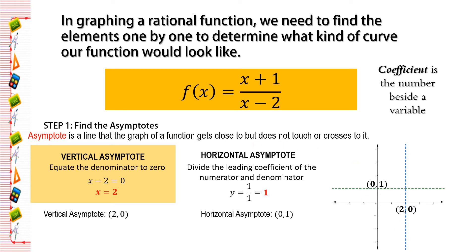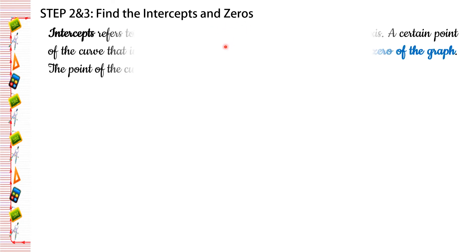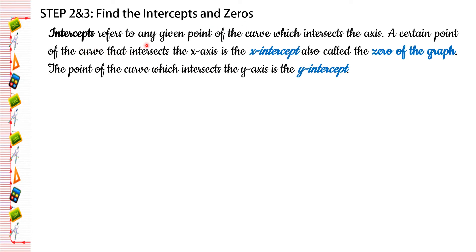After finding the asymptotes, let's proceed to step 2 and 3 combined: finding the intercepts and zeros. Intercepts refer to any point of the curve which intersects an axis. A point that intersects the x-axis is the x-intercept, also called the zero of the graph. A point that intersects the y-axis is the y-intercept.